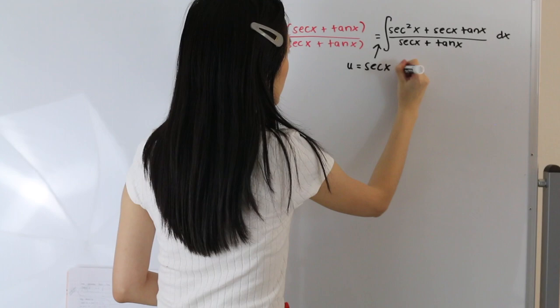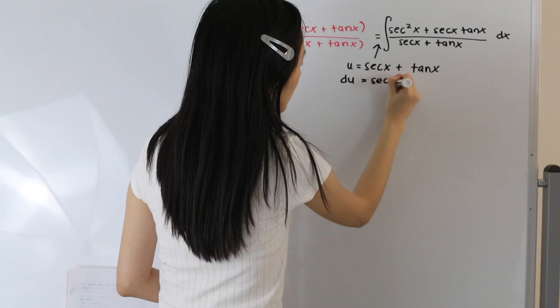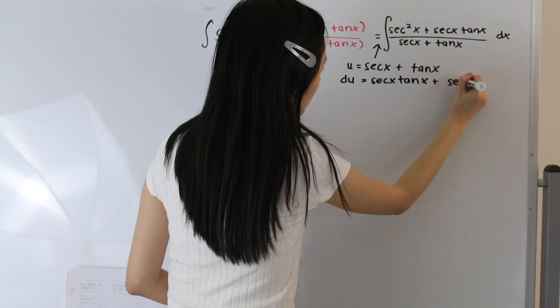And the next thing that we're going to want to do is take the derivative of both sides. So that gives us du is equal to secant of x tangent of x plus secant squared of x.